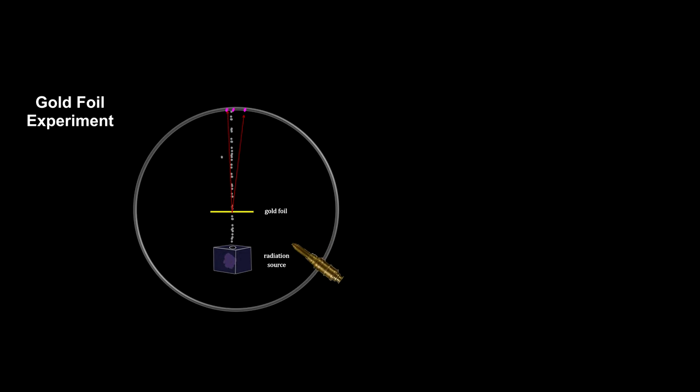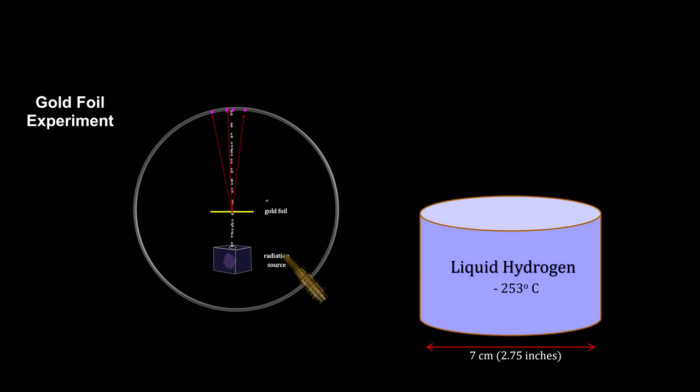Rutherford's target was a gold foil. In the SLAC experiment, the target was liquid hydrogen at a very cold temperature to keep the protons as close together as possible. As a source, Rutherford used a small piece of radium. The energy of the naturally occurring alpha particles was 7.7 million electron volts.